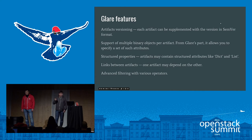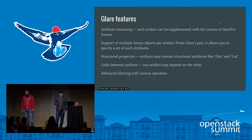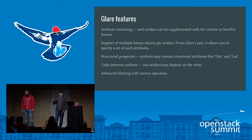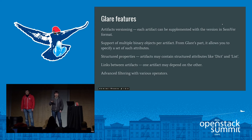Now let me describe other useful Glare features. First of all, it is artifact versioning, which means that an artifact is supplemented with a version in a standard format, and the user is able to sort and search by version. We have a special dynamic filter for that called 'Latest,' which literally returns artifacts with the latest versions only.